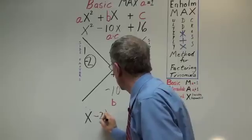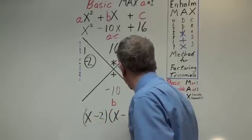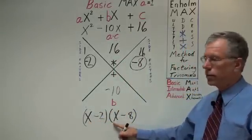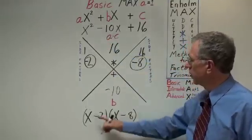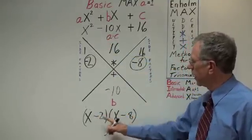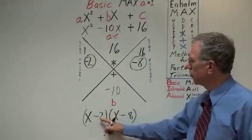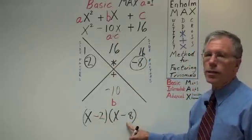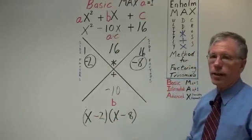x minus 2 times x minus 8. Again foil, x times x, the first term, x squared. The outer term negative 8x plus the inner term negative 2x gives us negative 10x. And as we just said above, negative 2 times negative 8 is 16. We're done.